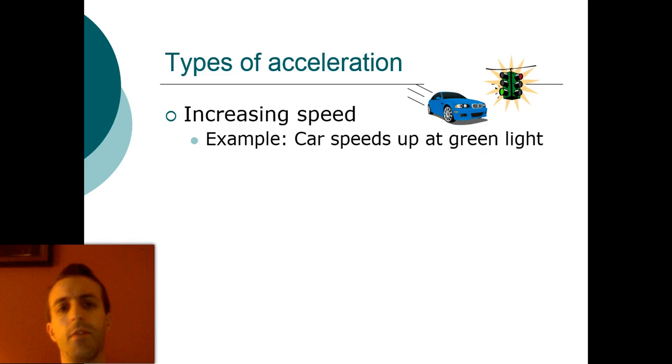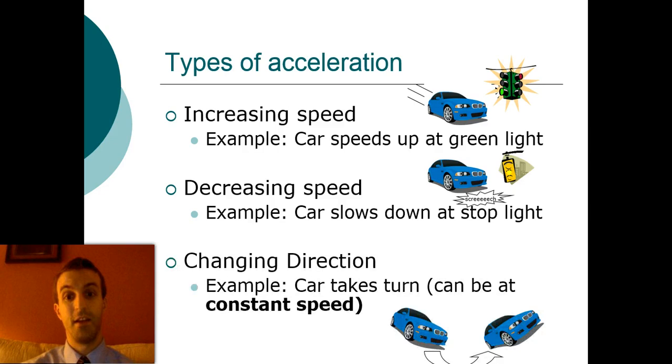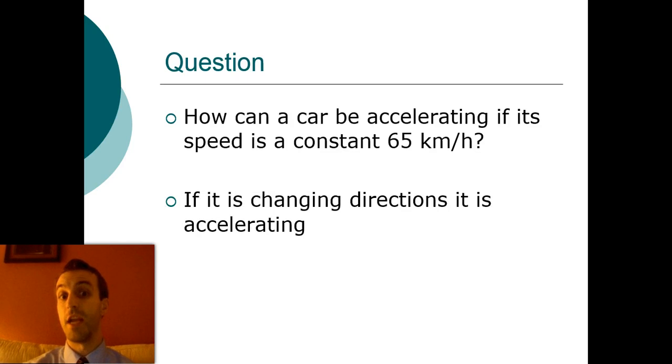For example, you have a car stopped at a stoplight, light turns green, it goes faster. Acceleration. Easy. That's a change. Then you have a light turn red, the car screeches to a halt. That's another type of acceleration. You have a car take a turn. It doesn't even matter if it's still going at the same speed. Because it changed direction, it's still considered a kind of acceleration. So how can a car possibly be accelerating if it only goes one speed, 65 kilometers per hour? That's one way. Another way could be if it changed directions.